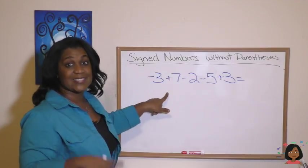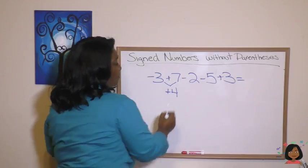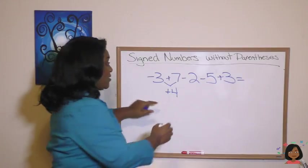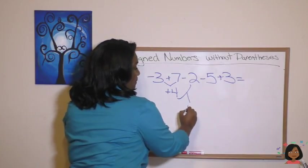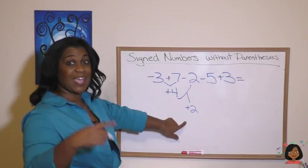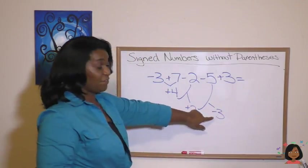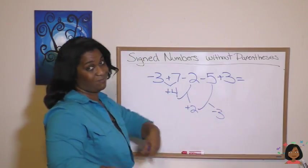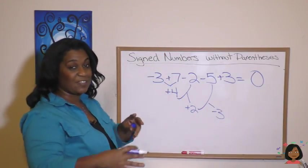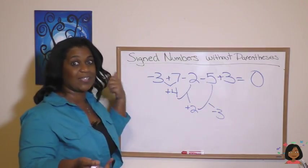Negative three plus seven is going to be a positive four. Positive four minus two is going to be a positive two. Positive two minus five is going to be a negative three. And a negative three plus three is going to be a zero. So all we did is just worked it from left to right. We didn't need the parentheses. We just had to calculate as we went.